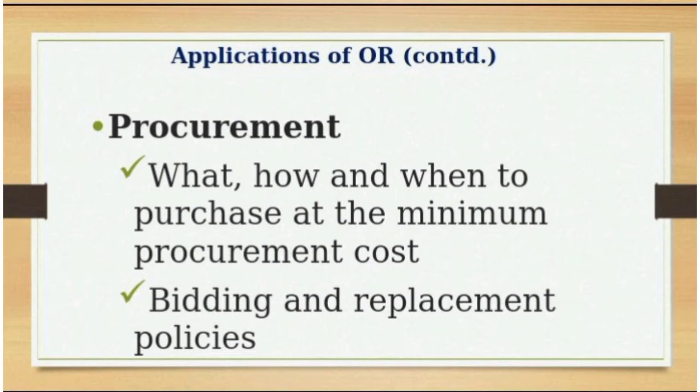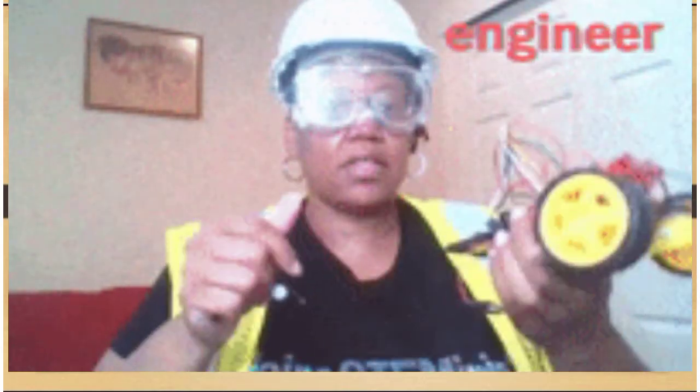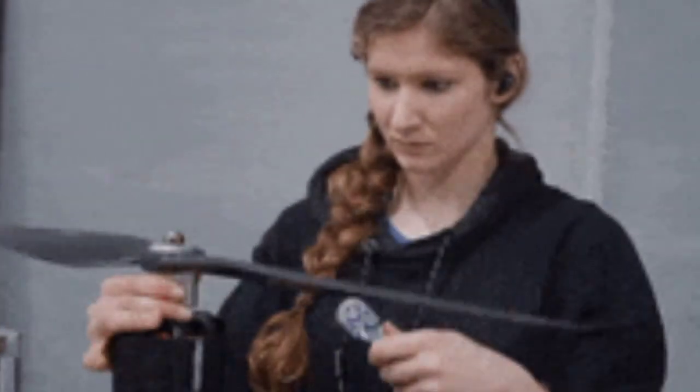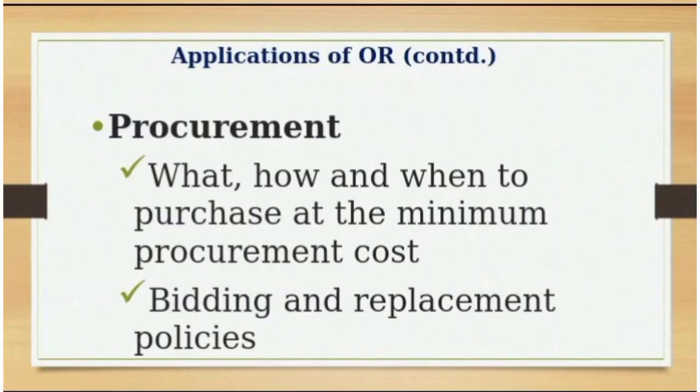Another application is bidding and replacement policies. You should know how to bid and how to replace equipment. Each piece of equipment has an end of life. If you continue using equipment past its intended life — say five years — into six years, you will experience a lot of downtime and equipment breakdowns, requiring engineers for hours and shutting down the plant. You must have what we call replacement policies to prevent that.